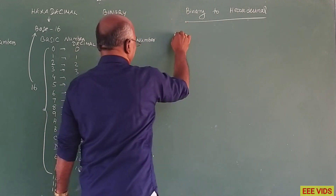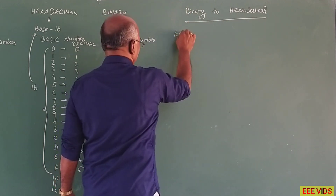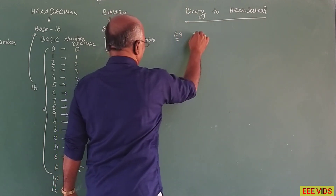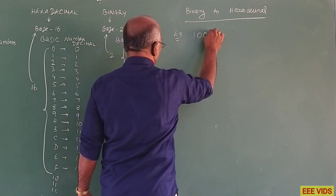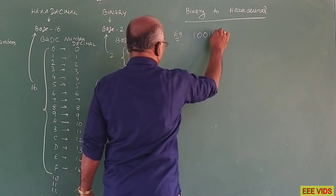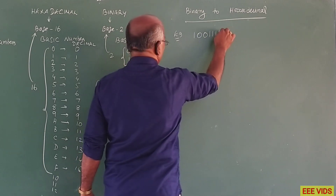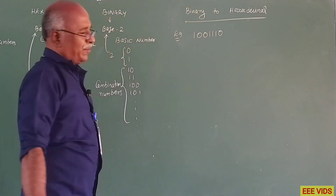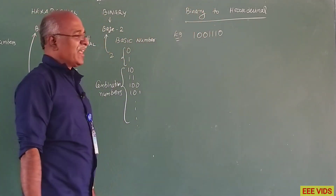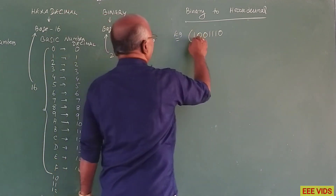So, for example, the binary number 1, 0, 0, 1, 1, 1, 0. This is the binary number. How do we convert it to a hexadecimal number?